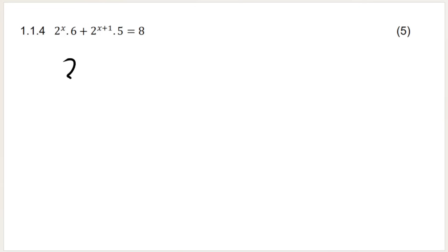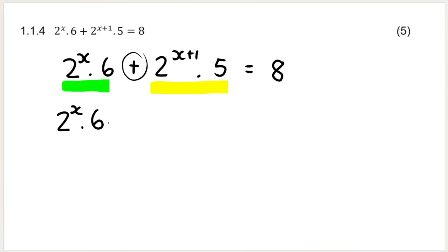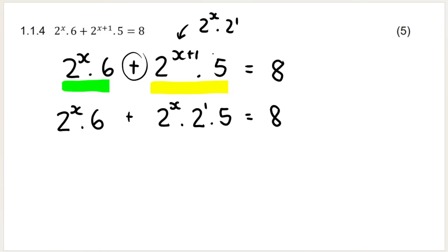My next question: we are solving for x. Looking at the left-hand side, we have two terms with a plus sign between them, so we need to factorize. It helps to break it up: the term 2 to the power of x plus 1 is the same as 2 to the power of x multiplied by 2 to the power of 1. And then 5 equals 8.